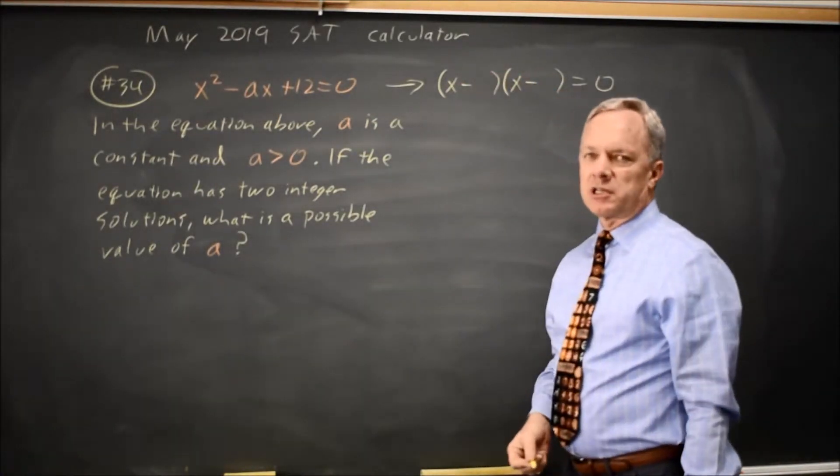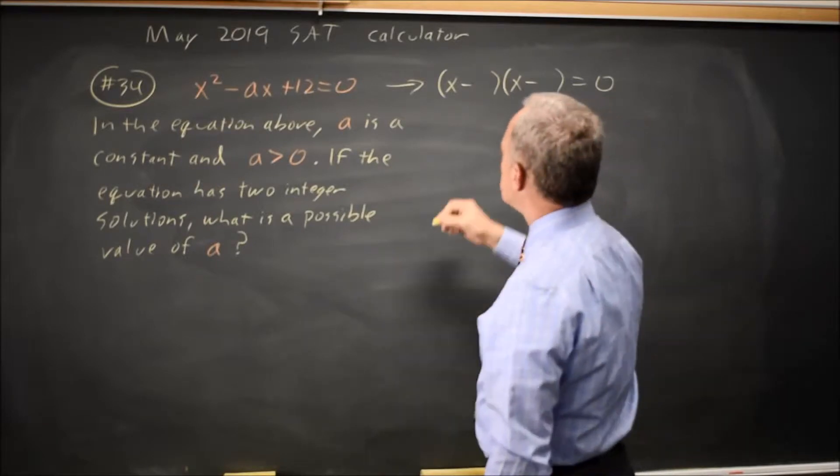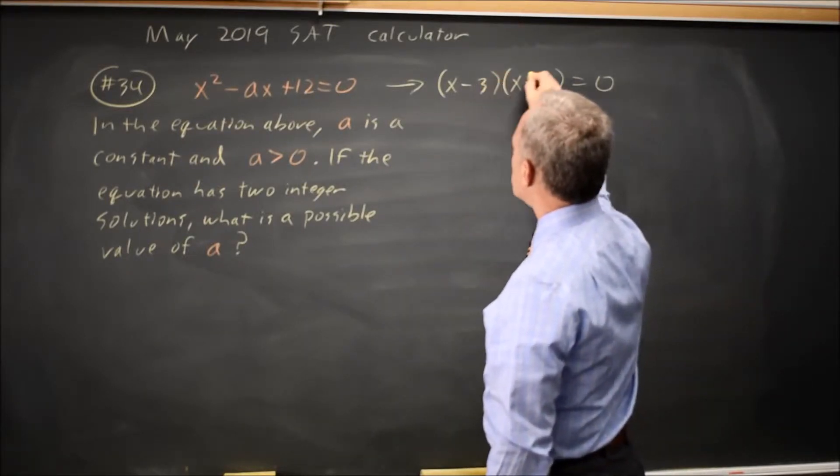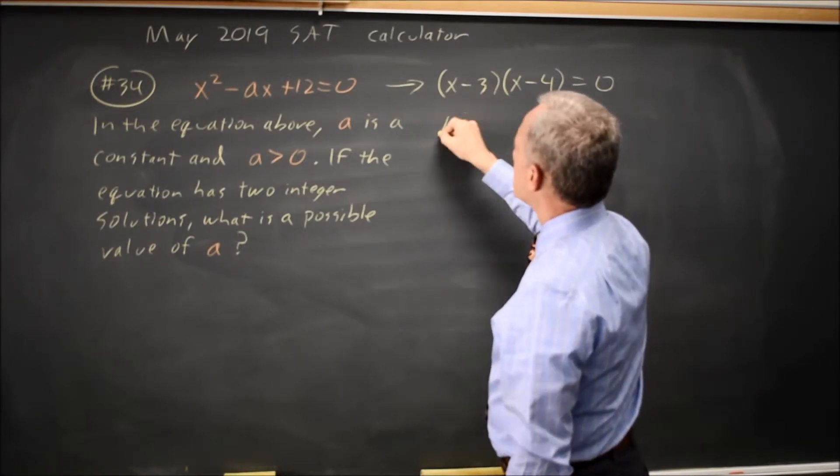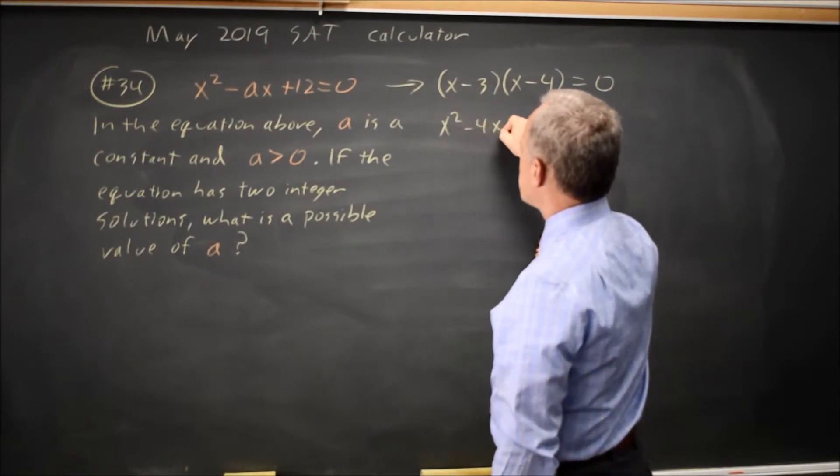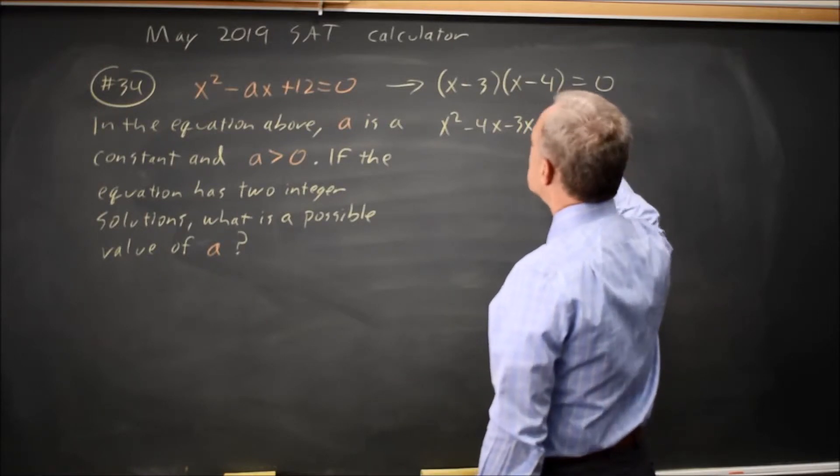and the product of the constants is positive 12. So I can go with 3 and 4, and FOIL gives me X squared minus 4X minus 3X plus 12 equals 0.